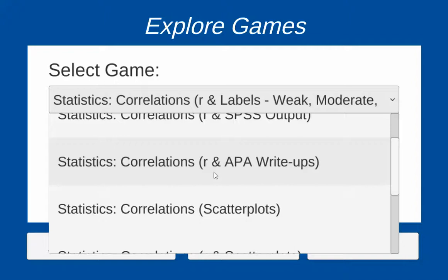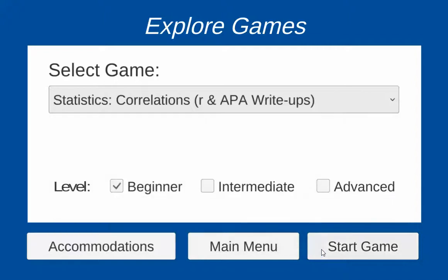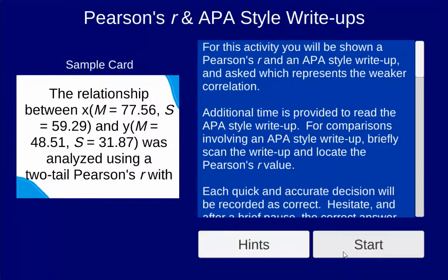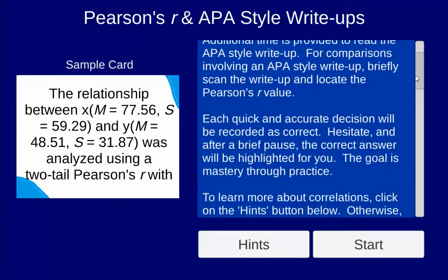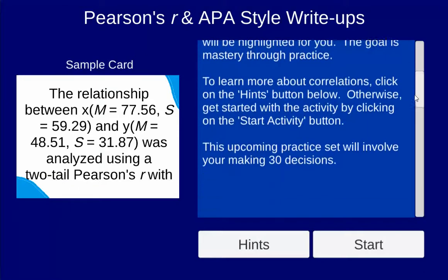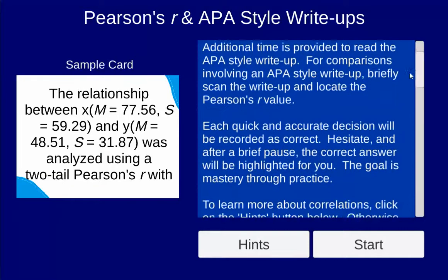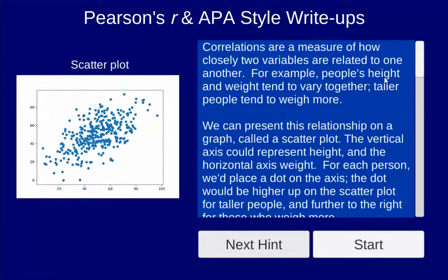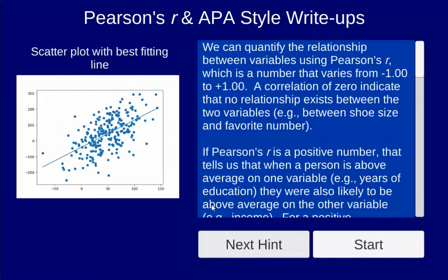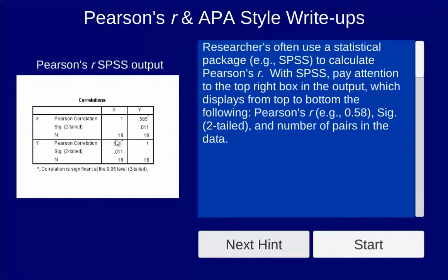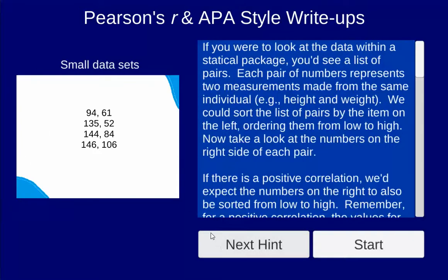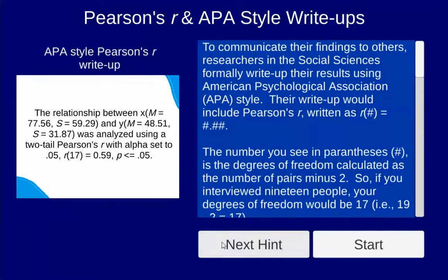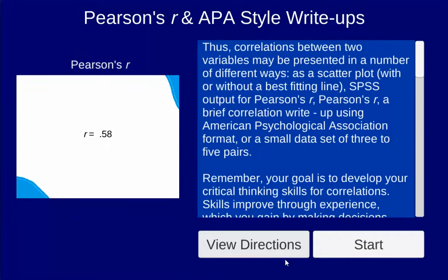That's the main benefit of this application — just to give you experience with a lot of different ways that correlations are reported. Next, we'll take a look at APA style write-ups. I'm going through this pretty quickly, but there is a set of directions provided. If you click on hints, it'll walk you through how to interpret each of the different types of stimuli available in the games.